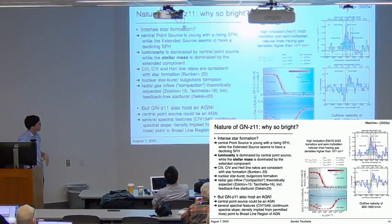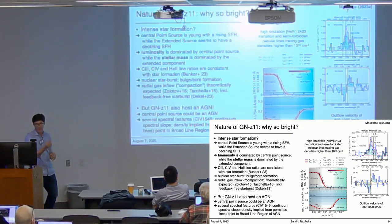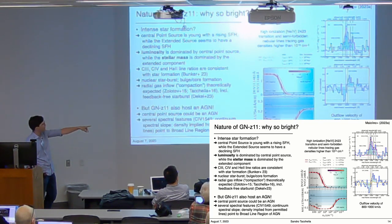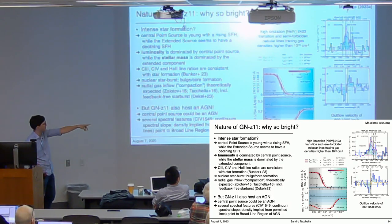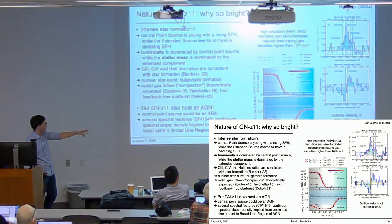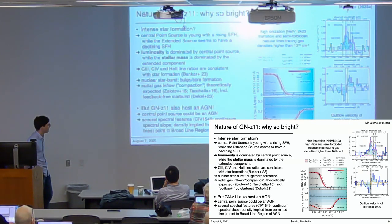When we look at the spectrum in more detail, we find clear indications of AGN activity in the core of this galaxy. One is the P-Cygni feature in the C IV line, implying outflow velocities of 800 to 1,000 kilometers per second. The semi-forbidden lines indicate gas densities of about 10^10 per cubic centimeter, suggesting we are looking at a broad-line region of an AGN.